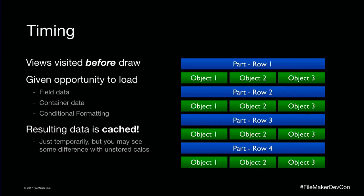Once the views are up, we get a request from the OS to draw a part of the screen, and the next step is to get the data. Before FileMaker 14, we actually intermingled the rendering and the data fetching. The OS would say it wants to draw a corner of the screen, we'd visit all the views inside that rectangle drawing from back to front, and when we hit a view with data we'd stop and ask Draco if it had the information — and if it didn't, we'd sit there and wait.